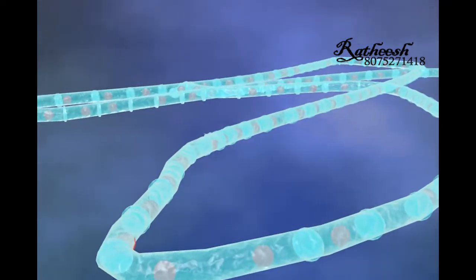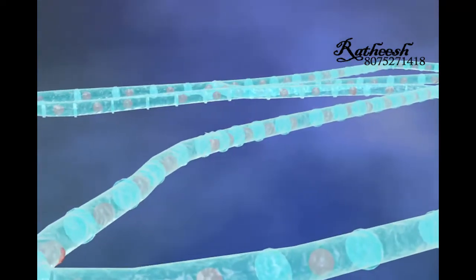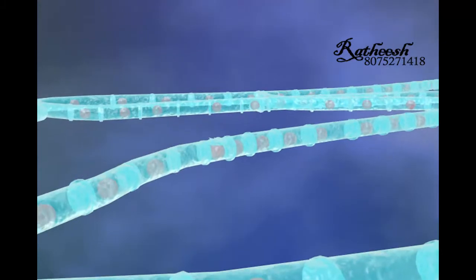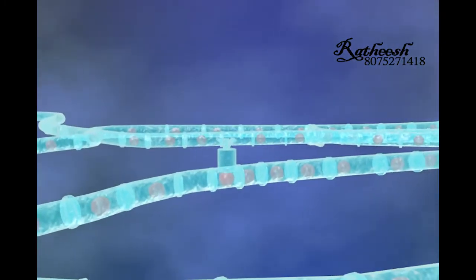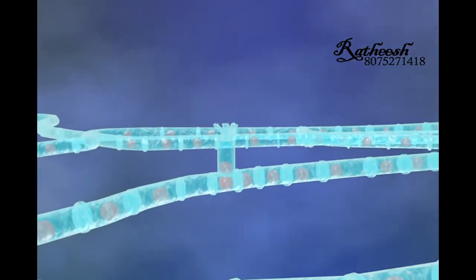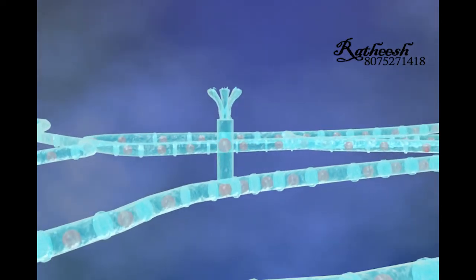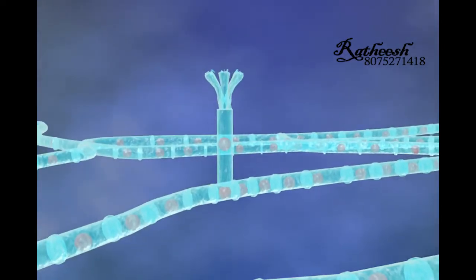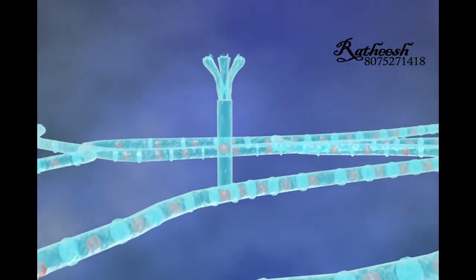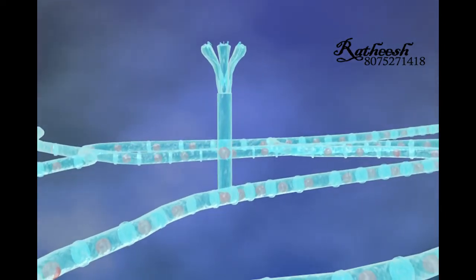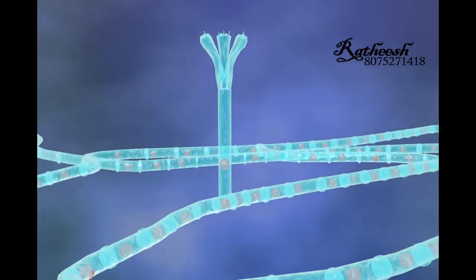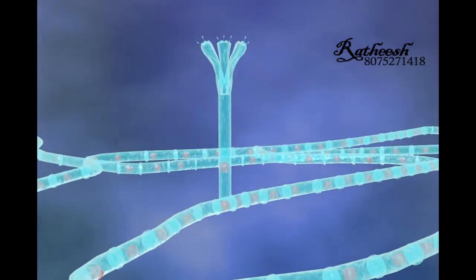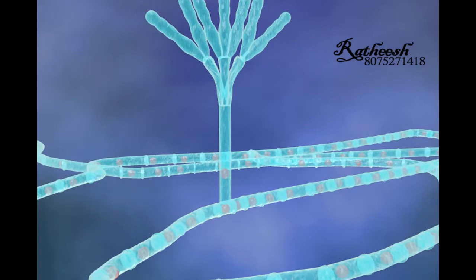Penicillium is a multicellular branched filamentous fungus and it produces asexually by the formation of non-motile spores called conidia. During asexual reproduction, erect branches called conidiophores are produced from a fungal hyphae.